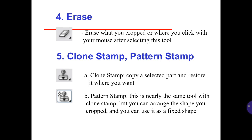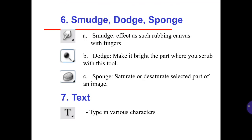Number 5: Clone Stamp and Pattern Stamp. A: Clone Stamp — copy a selected part and paste it where you want. B: Pattern Stamp — nearly the same tool as Clone Stamp, but you can arrange the shape of your pattern and use it as a fixed shape. Number 6: Smudge, Dodge, and Sponge. A: Smudge — effect of rubbing the canvas with fingers. B: Dodge — makes the area brighter where you apply the tool. C: Sponge — saturate or desaturate a selected part of an image.